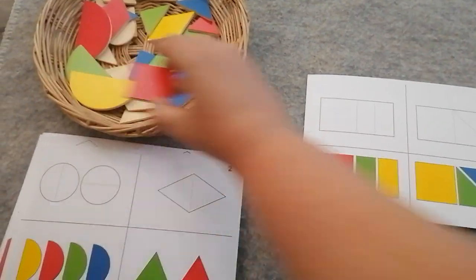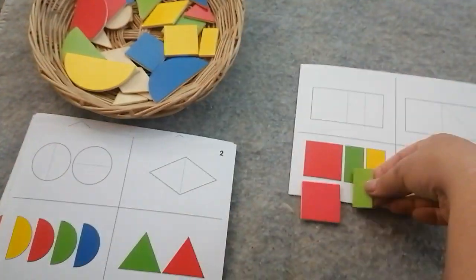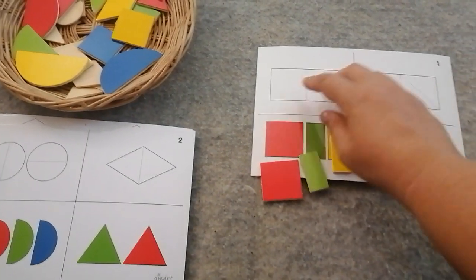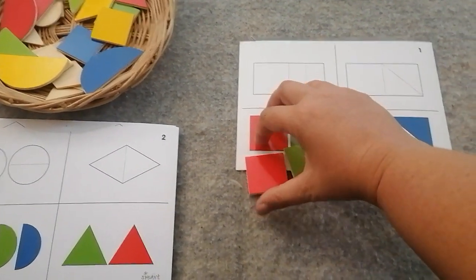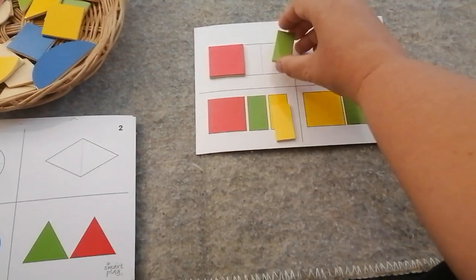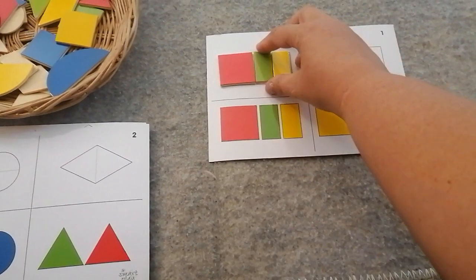Let's see, there's the red square, the green rectangle, and the yellow rectangle. Now we're gonna put them in these blocks. The red square, the green rectangle, and the yellow rectangle.